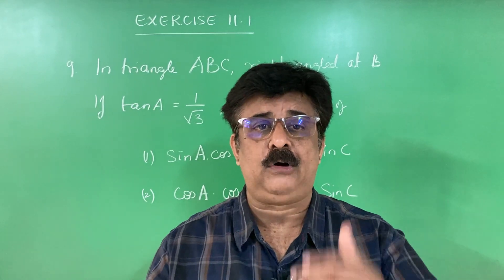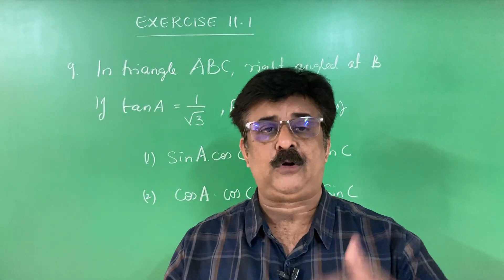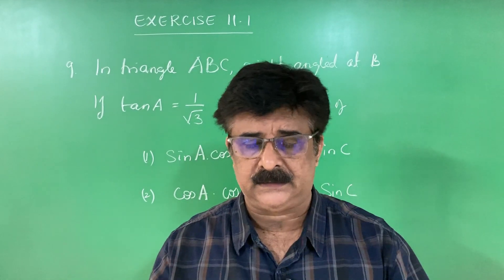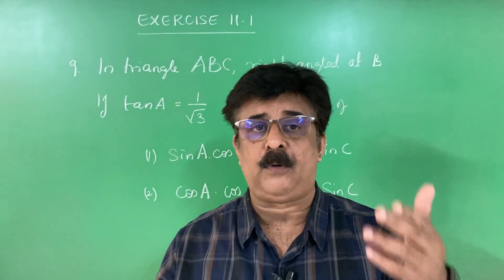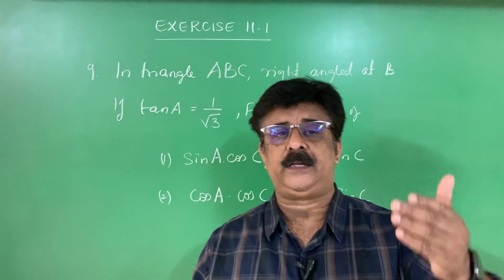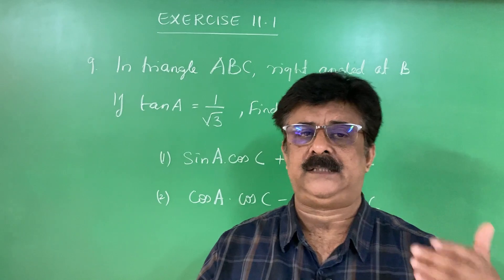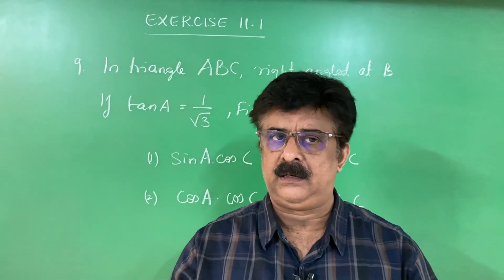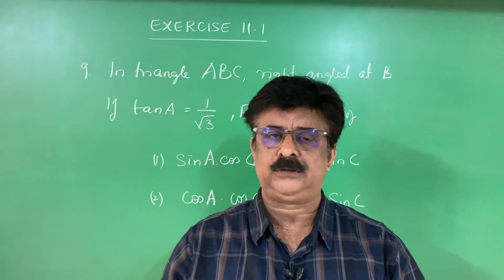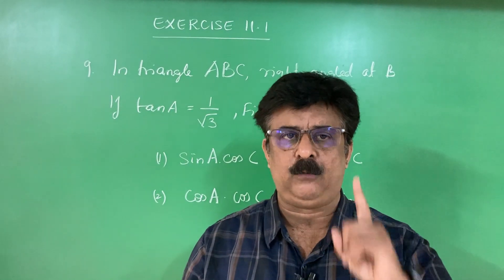Sin theta is equal to opposite by hypotenuse. Cos theta is equal to adjacent by hypotenuse. Tan theta is equal to opposite by adjacent. Cosecant theta is equal to hypotenuse by opposite. Secant theta is equal to hypotenuse by adjacent. And cot theta is equal to adjacent by opposite. That you have to remember. Based on these six trigonometrical ratios, we have one exercise — Exercise 11.1.